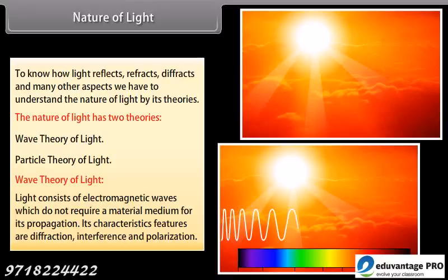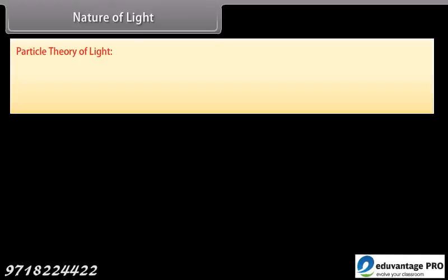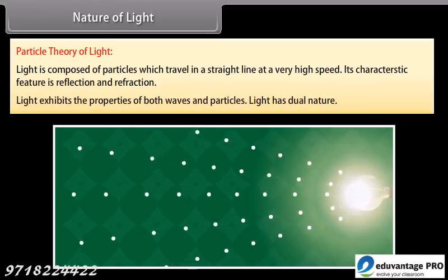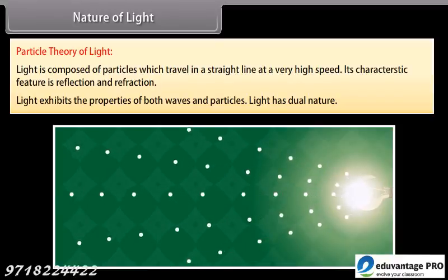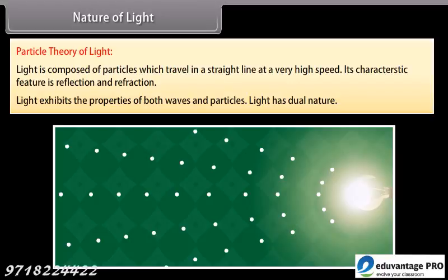Particle theory of light: Light is composed of particles which travel in a straight line at a very high speed. Its characteristic features are reflection and refraction. Light exhibits the properties of both waves and particles. Light has dual nature.